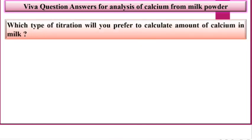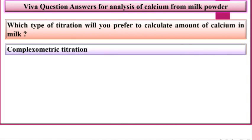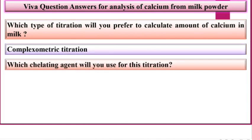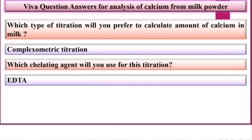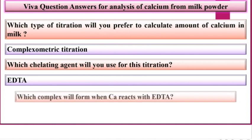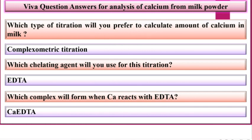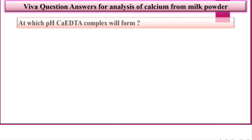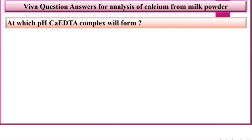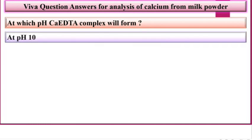Which type of titration will you prefer to calculate the amount of calcium in milk? Complexometric titration. Which chelating agent will you use for this titration? EDTA. Which complex will form when calcium reacts with EDTA? CA-EDTA. At which pH will the CA-EDTA complex form? At pH 10.